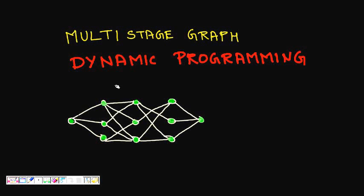In this lecture, we will learn about multi-stage graphs and how to find the shortest path from a source to a sink in a multi-stage graph. We will use dynamic programming to solve this problem.